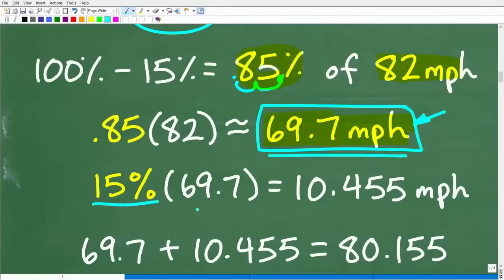Of course, we'll change this 15% to 0.15. So when we do this, we're going to get 10.455 miles per hour. That's 15% of 69.7.